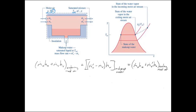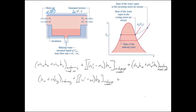Now we divide through by the mass flow rate of air to get to the humidity ratio. Our equation becomes: the enthalpy of the air plus the humidity ratio times the saturated liquid enthalpy of the vapor — that's all entering — plus the humidity ratio prime minus the humidity ratio times the saturated liquid enthalpy for the makeup water, equals the enthalpy of the air plus the humidity ratio prime times the saturated enthalpy value for the moisture on the exiting side.